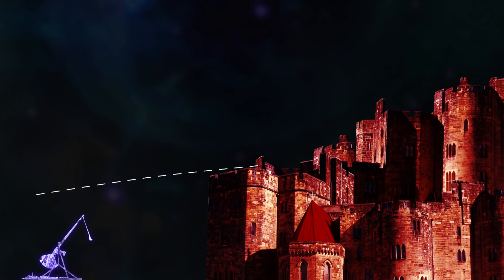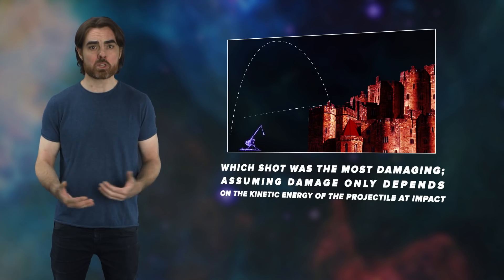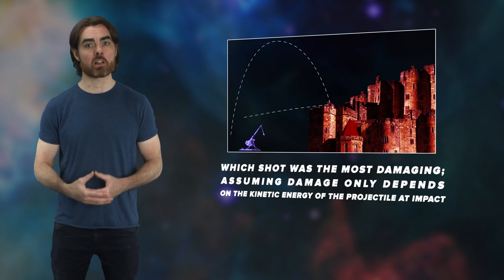You fire your trebuchet at your enemy's wall twice. In the first case, the projectile flies upwards on a shallow path to strike the top of the wall. And in the second, the projectile flies high in the air to fall again, striking the same location. In both cases, the trebuchet counterweight started at the same height and also reached the same height at the end of its swing. My question was, which shot was the most damaging? Assuming damage only depends on the kinetic energy of the projectile at impact.